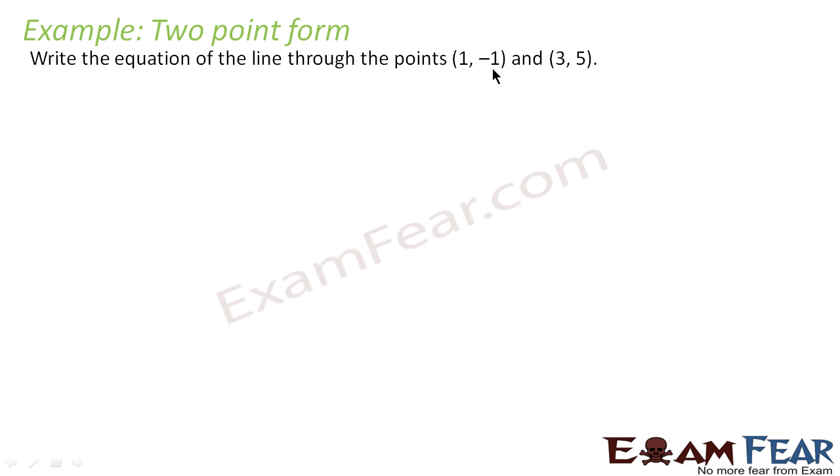So let's draw the line first. This is a line and this point is (3, 5), I'll call it P, and this point is (1, -1), I'll call it K. And this is normal x, y.